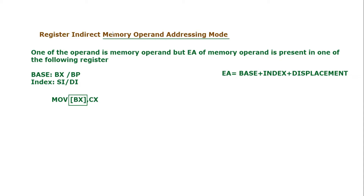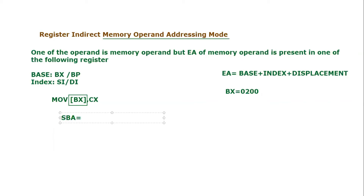Now let's consider the value of BX for this example. BX is equal to 0200 — it is just a dummy example. We know that the square bracket indicates only the effective address, but the overall formula for the physical address should be segment base address colon effective address. Since no segment base address is mentioned, we will use the default segment, which is the data segment. So let's consider the data segment value is 0100.